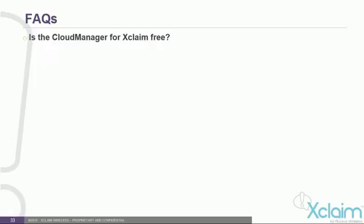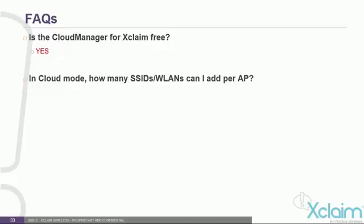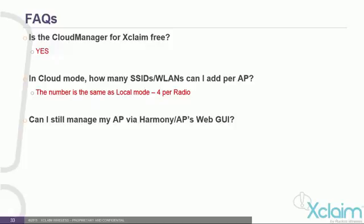Now we'll cover some of the frequently asked questions. Is Cloud Manager for Xclaim free? Yes, it's free with no subscription cost. In Cloud Manager mode, how many SSIDs or wireless LANs can I add per AP? The number is the same as local mode — 4 per radio. With a 2-radio AP such as the XI-2 or XI-3, you can have up to 8 wireless LANs or SSIDs. Can I still manage my AP via Harmony or the AP's web GUI? Yes, but Harmony has a limited feature set. When moving from Cloud Manager to Harmony, it requires a hard reset on the access point and puts the AP back into local mode. It's an either-or situation — you manage in Harmony but not with Cloud Manager, or vice versa.